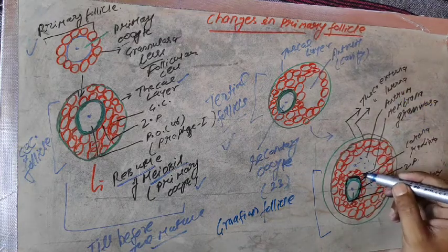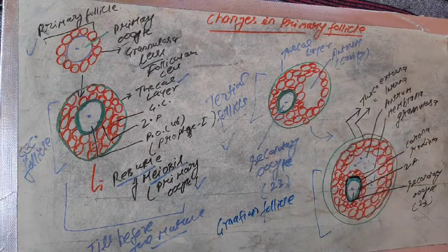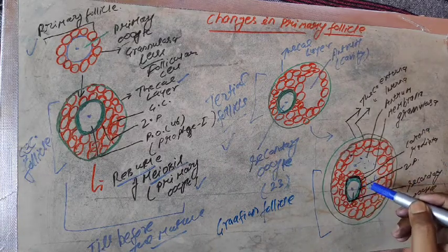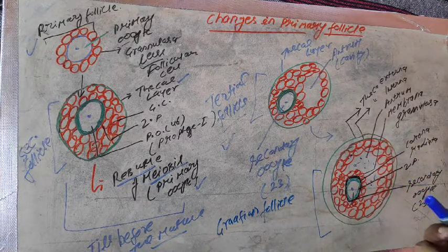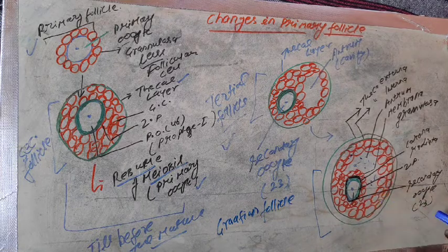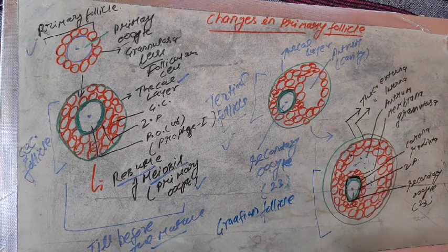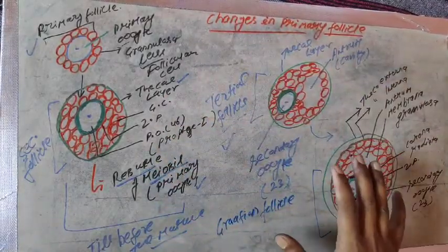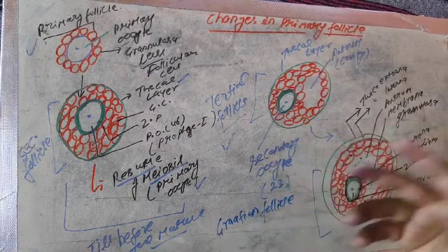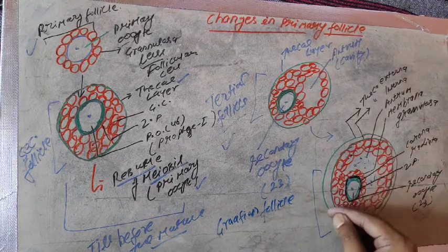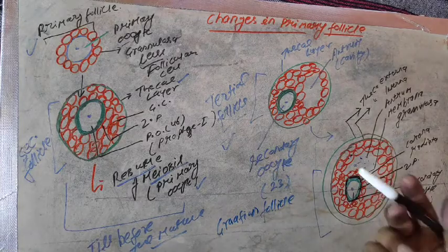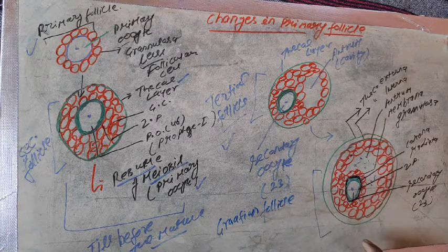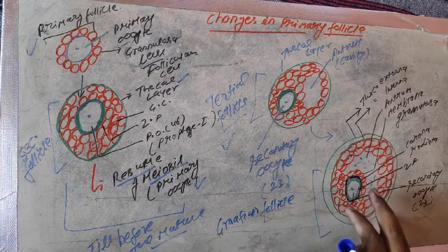Apart from the antrum, there is the membrana granulosa layer. The overall structure of the Graafian follicle includes the membrana granulosa cells and the secondary oocyte with 23 chromosomes. The formation of Graafian follicles continues after puberty, and the Graafian follicle will later release the egg cells during ovulation, which will be discussed in the next video lecture.